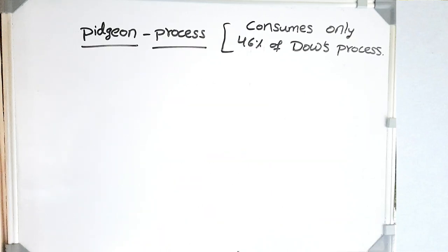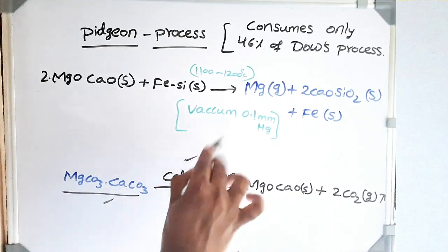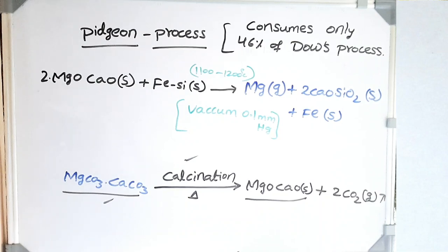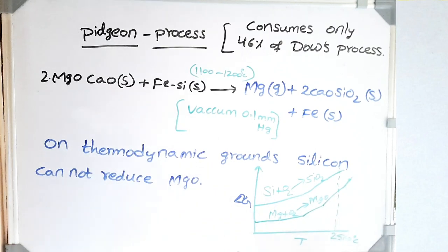Now let's look at the most important process for magnesium extraction: the Pigeon process. The basic equation involves calcined dolomite reacting with ferro-silicon — both in solid state — to give magnesium in gaseous phase, CaO·SiO₂, and iron, at a temperature of 1150–1200°C under vacuum of 0.1 mmHg. On thermodynamic grounds, silicon cannot reduce magnesium oxide. If you look at the Ellingham diagram, the two curves do not intersect even at 2500°C.